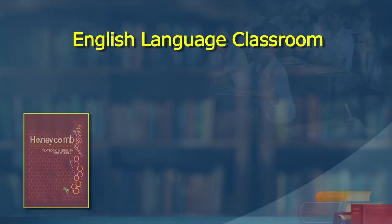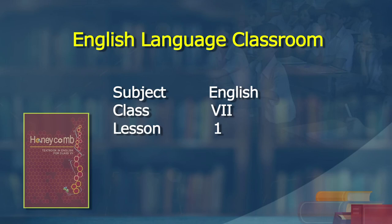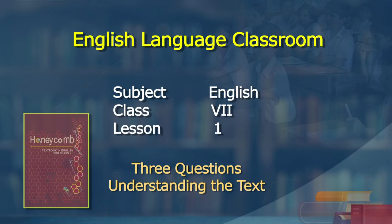Hello and welcome to the wonderful world of English language classroom. This is English language classroom for class 7 learners. Today, we will read and understand the text of the first lesson, Three Questions. Learners of class 7, ready to read and enjoy and understand the text Three Questions by Leo Tolstoy, the famous Russian author who was an apostle of peace. He has written a lot of short stories advocating peace.